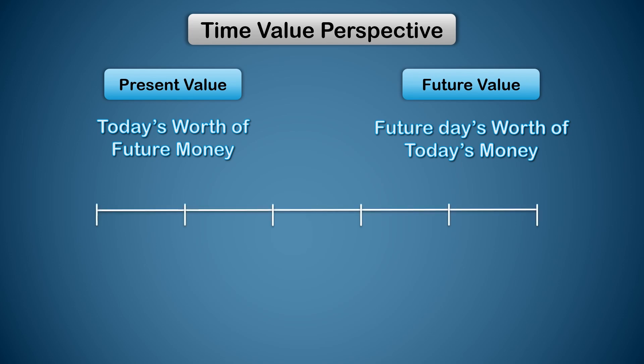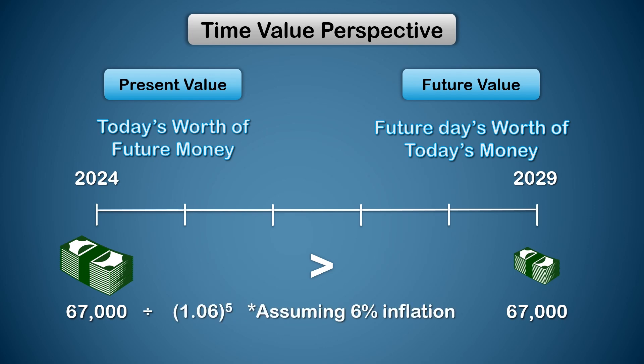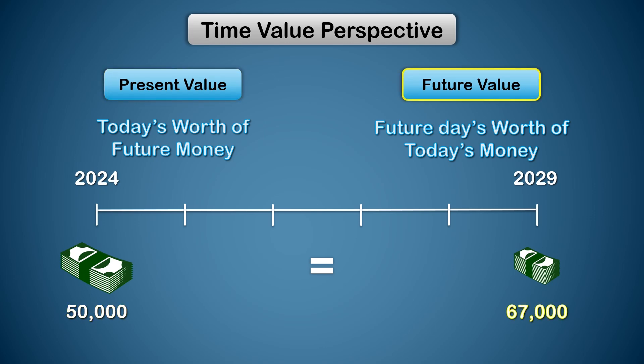Let's say you are expected to receive 67,000 rupees after five years in 2029. You know that 67,000 after five years is worth much lower than 67,000 today — but how much lower? We can find that out by dividing it by the discount factor, which is 1.06 to the power 5, assuming inflation is 6%. In other words, the value of money is expected to reduce by 6% per year, so over five years it reduces by 1.06 to the power 5, which equals approximately 1.338. That gives us approximately 50,000. This 50,000 is the present value and 67,000 is the future value.